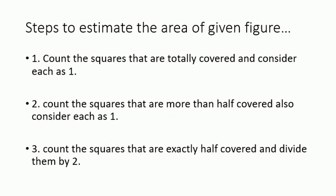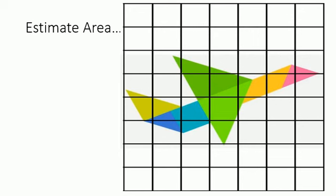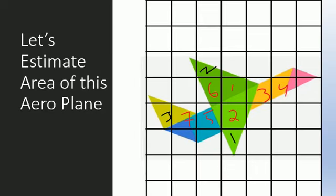To estimate the area of a given irregular figure, we have some steps to follow. Step one: count the squares that are totally covered and consider each as one. Step two: count the squares that are more than half covered and also consider each as one. Step three: count the squares that are exactly half covered and divide them by two.